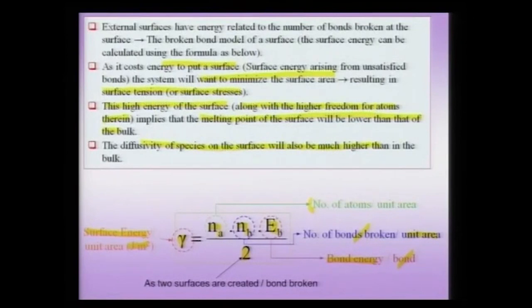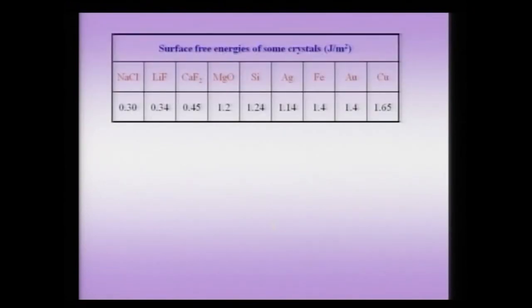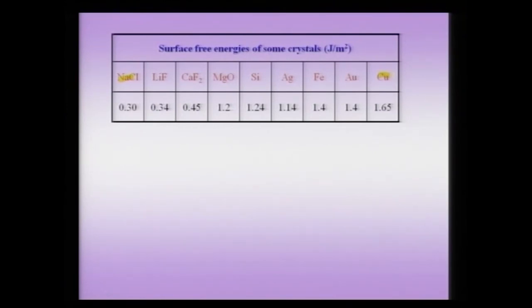We have a formula for the energy with three terms: the number of atoms per unit area, the number of bonds broken per atom, and the bond energy per bond. If you look at the surface free energy of some crystals listed here, you would notice that some ionic crystals like sodium chloride have a lower surface energy compared to copper. In the case of sodium chloride we have to worry about the kind of surface we are talking about, since surface energy is not isotropic. That is why, if you have an equilibrated crystal annealed for a long time, you will notice it actually has a polyhedral surface. The order of magnitude of the surface energy is about one joule per meter square.